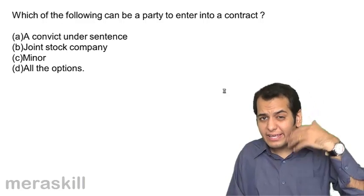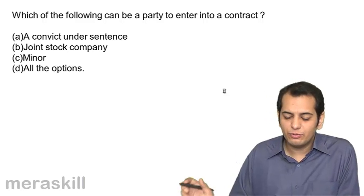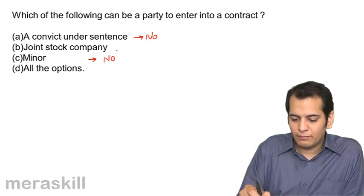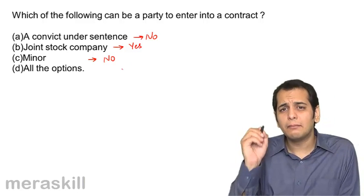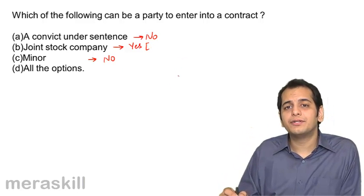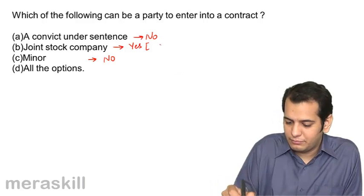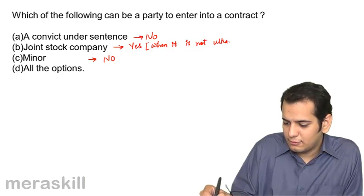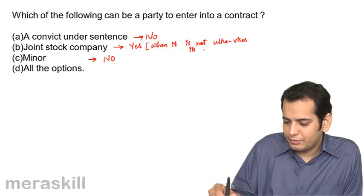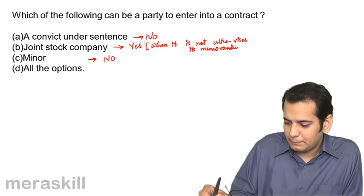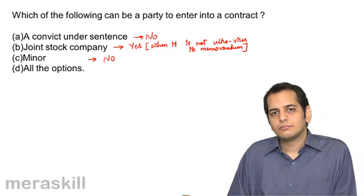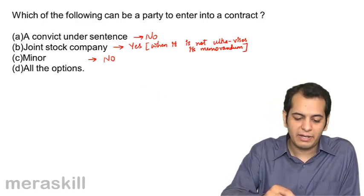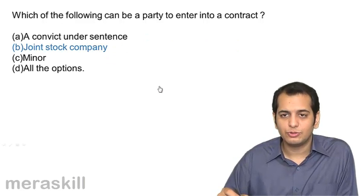Who of the following can enter into contracts? Can a convict enter into a contract? No. Can a minor enter? No. Can a company enter? Yes. A company can enter into a contract, but only when it is acting within the powers given by its memorandum — that is, when it is not ultra vires its memorandum. So the answer is joint stock company, because all the options cannot be true since minors and convicts cannot enter into contracts.